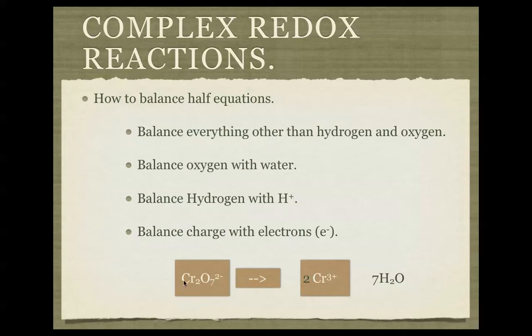Now we've got no hydrogen on this side at the moment, but we've got seven times two, which means 14 hydrogens. So to balance that, we need to put H+ on the other side. We need to balance charge with electrons on one of these sides, so we'll work out where the electrons are going to go.